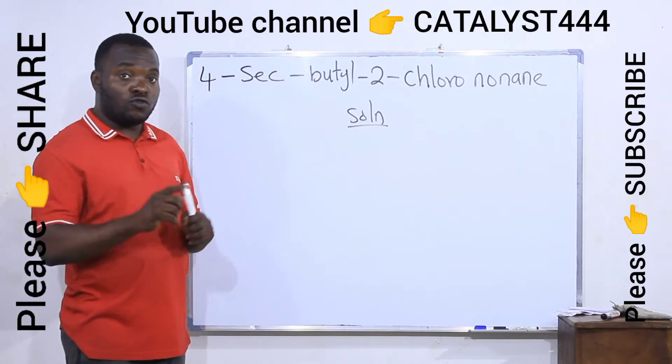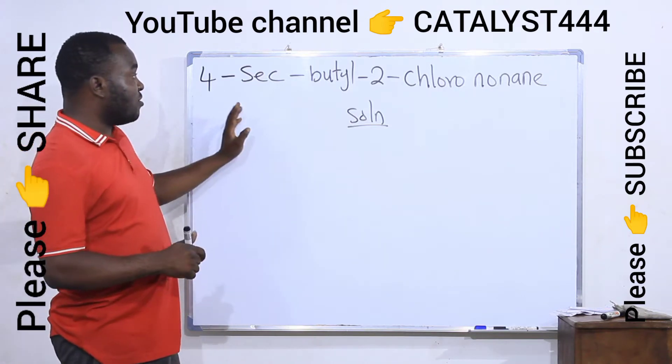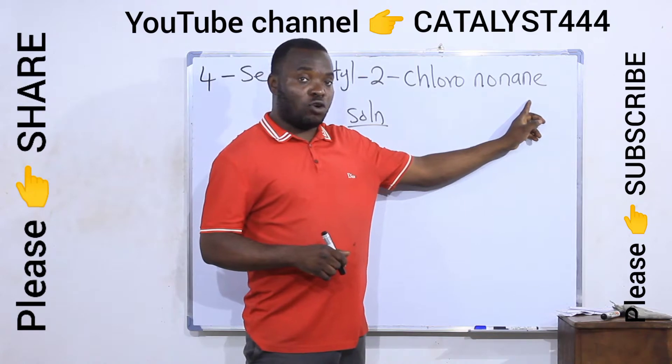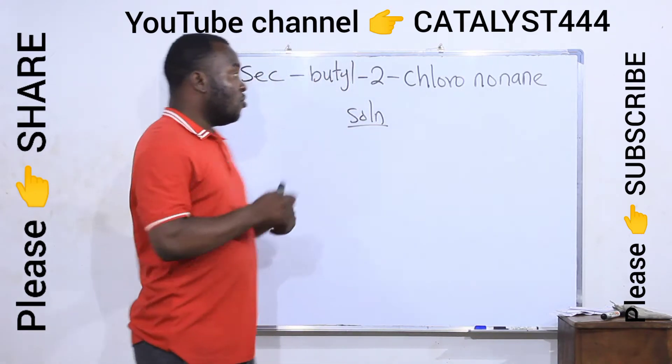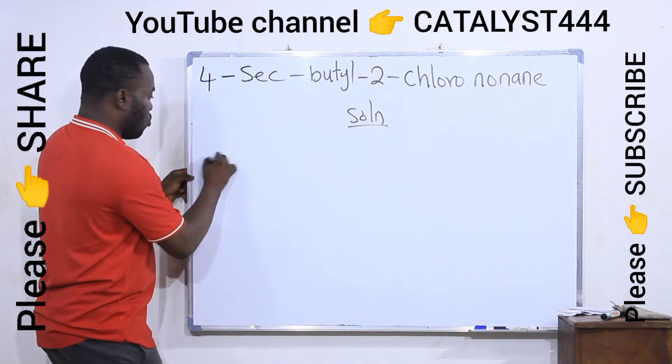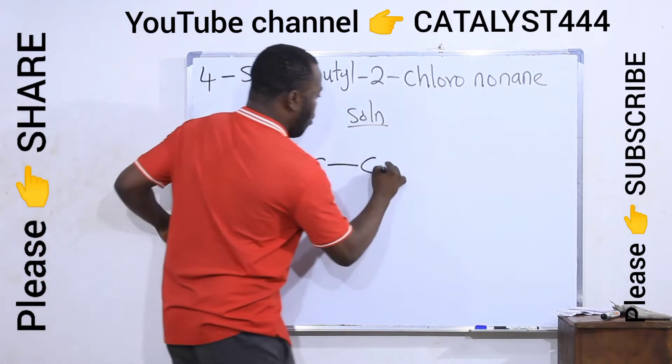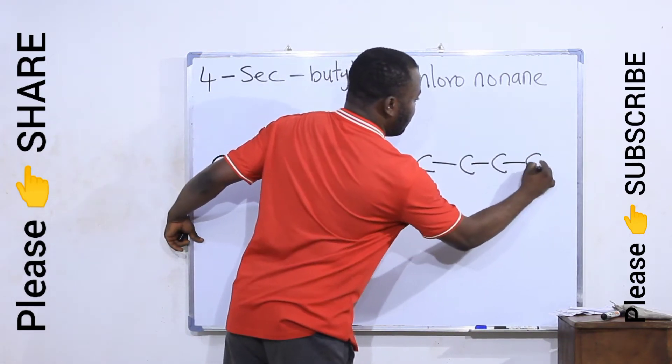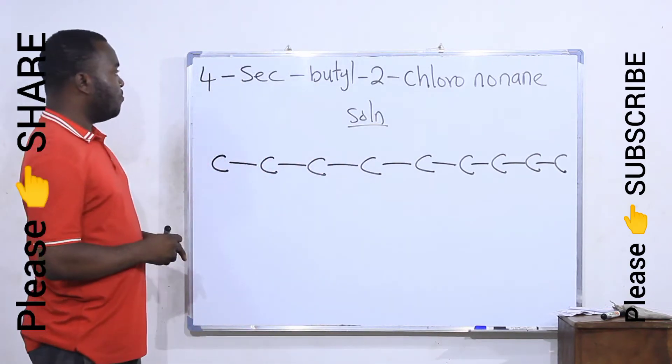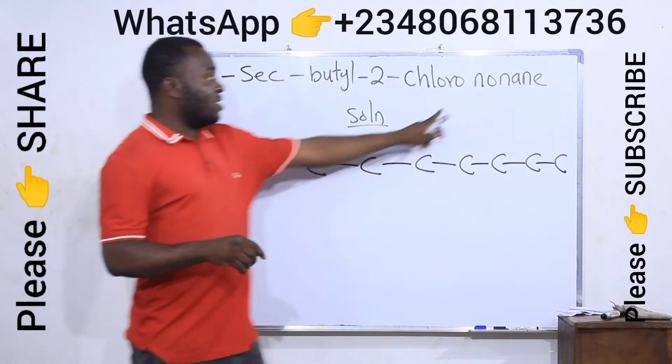The first thing you have to do is to locate the parent's name, which is the longest chain. And how do you locate it? Go to the last name given in that structure. The last name here is nonane, which means nine. So you draw nine carbon atoms: one, two, three, four, five, six, seven, eight, nine. This is nine.